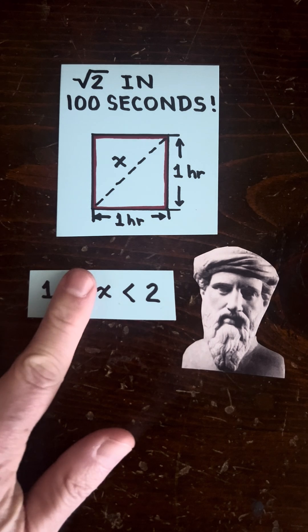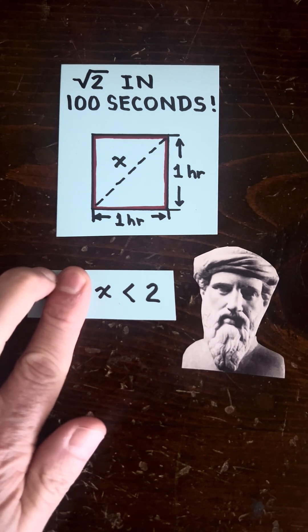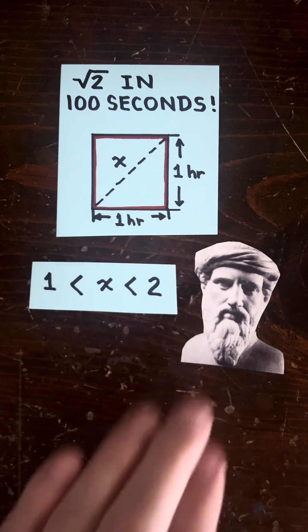And they knew that the shortcut was less than two because the mathematical proof is it's a shortcut. That's what shortcut means. And they also knew that X was bigger than one because look at it, it's bigger than one.